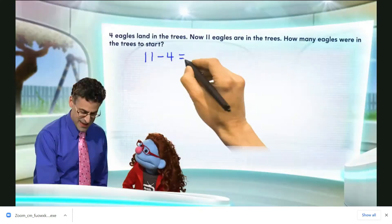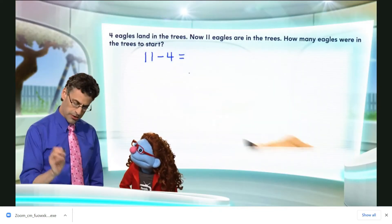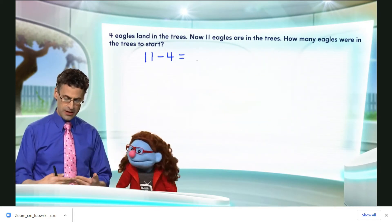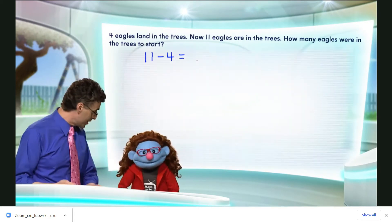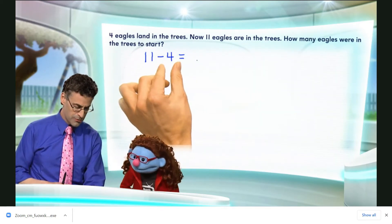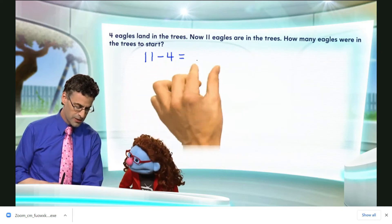Subtract, that's right. Then the answer, whatever it is, and we don't know what it is yet, but whatever it is, that's going to represent how many eagles were in the trees at the start. Because we have 11 now, four joined, so when we take away those four that joined, we'll have the starting number.